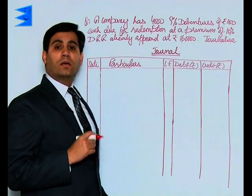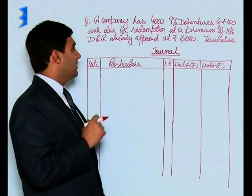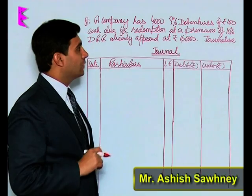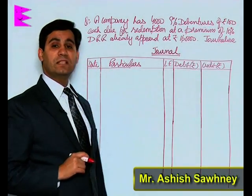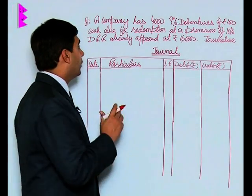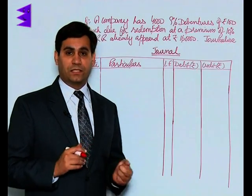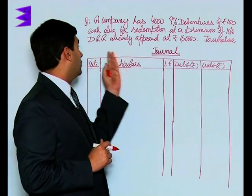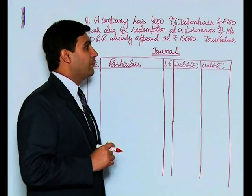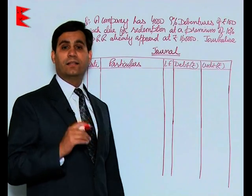Another question based on lump sum redemption is like this. A company has 4,000 nine percent debentures of Rs. 100 each due for redemption at a premium of 10%. Also, DRR already appeared in the books at Rs. 1,60,000.